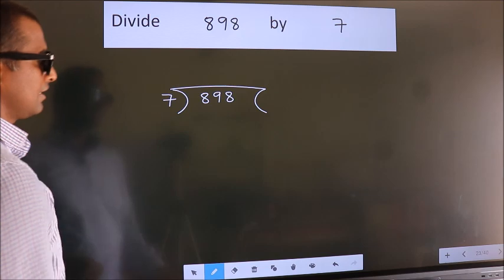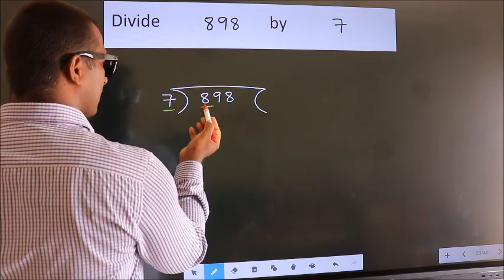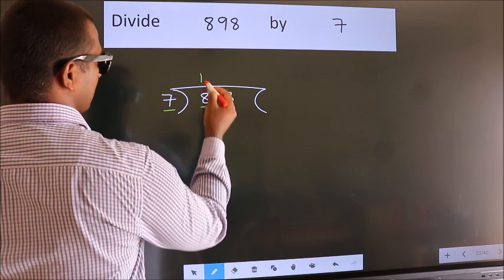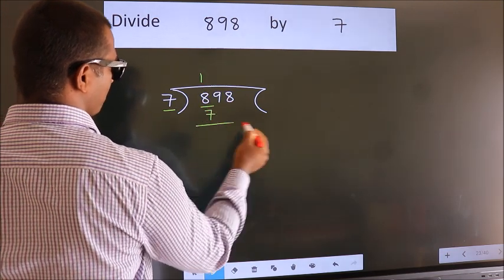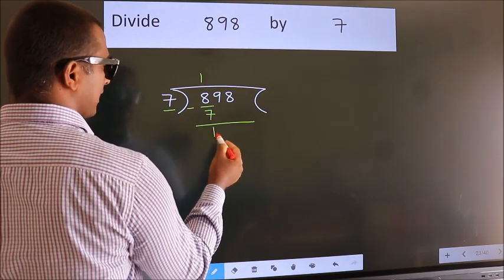Next. Here we have 8, here 7. A number close to 8 in 7 table is 7 once 7. Now we should subtract. We get 1.